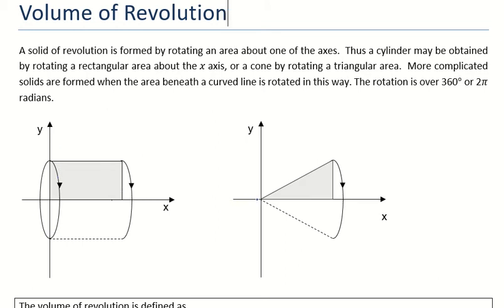Likewise over here, if you imagine this triangle that I have traced out, if it was spun around the x-axis by 360 degrees it would create a cone shape. So the volume that is created is called the volume of revolution.